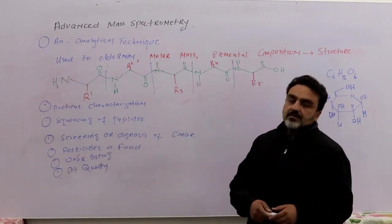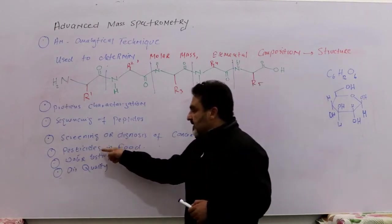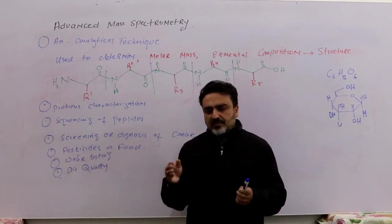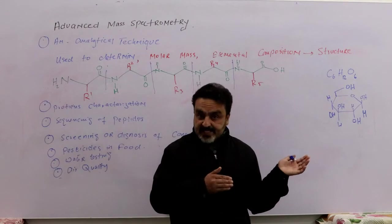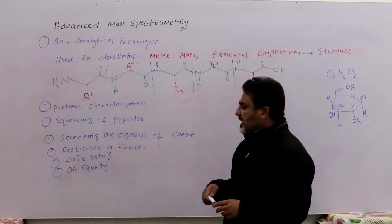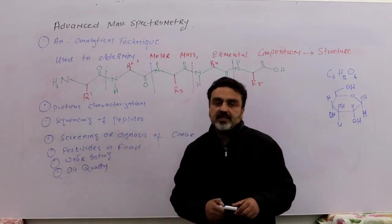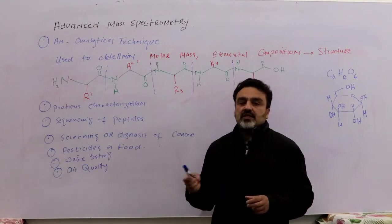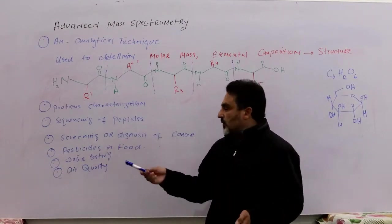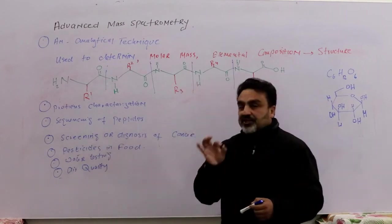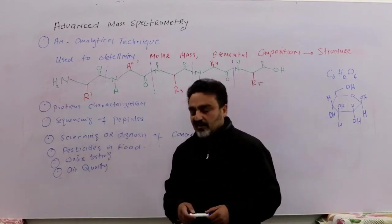Pesticides in food. The food we eat, the majority of the food we eat, comes from crops, and they use pesticides to kill those small creatures which are destroying the crops.